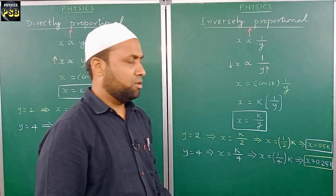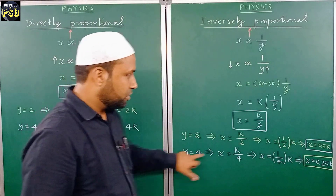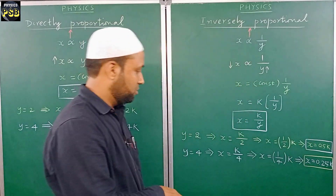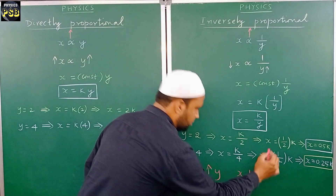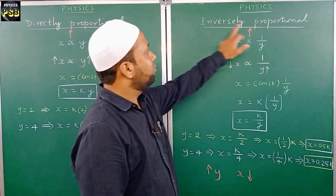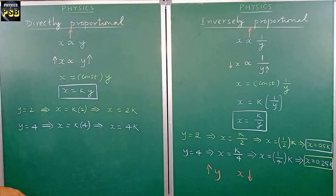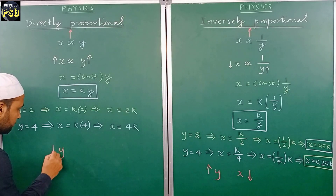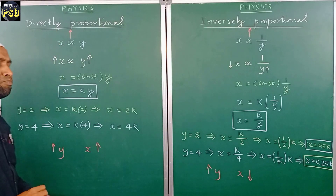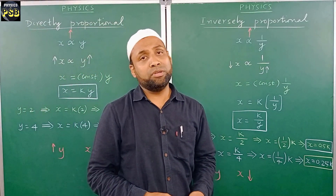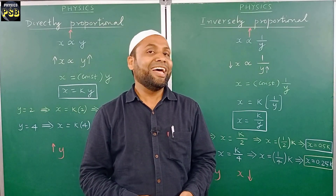If you compare the two equations and the values of x, you will find that with increasing the value of y, the value of x has reduced. When we increase the value of y, the value of x decreases — this clearly explains inversely proportional. Whereas in the first case, when we increase the value of y, the value of x also increases — this explains directly proportional. I hope the concept is clear to you. If you have any doubt related to the topic, please put your question in the comment section. Thanks for watching.